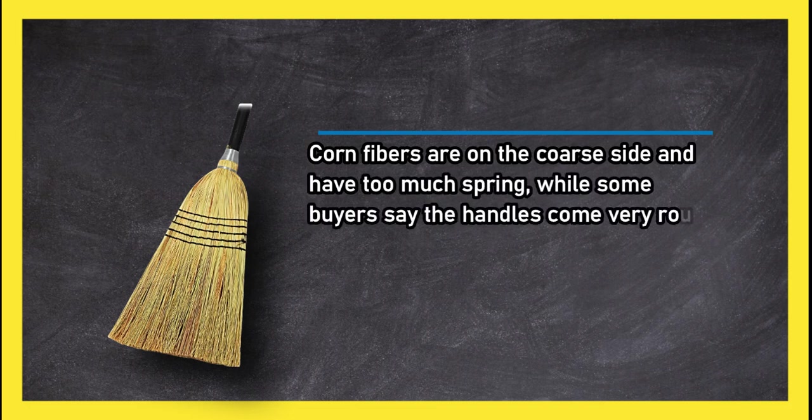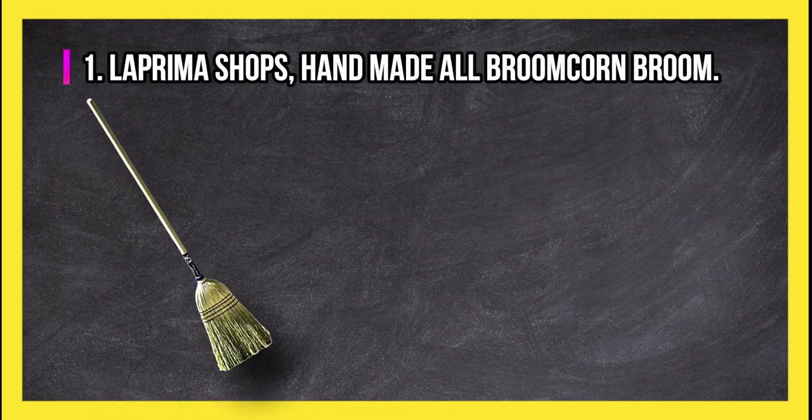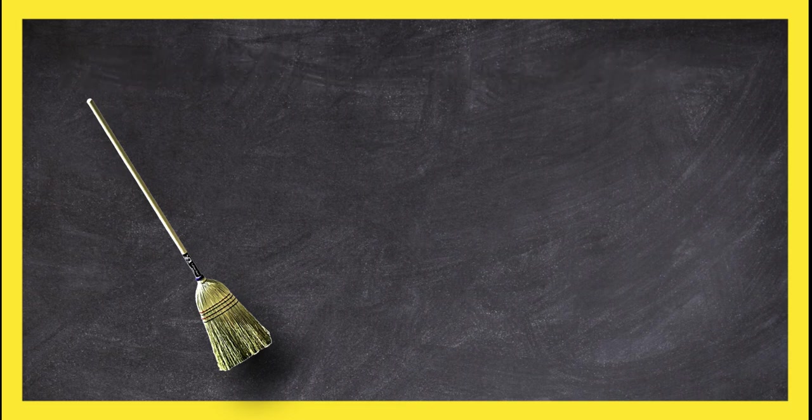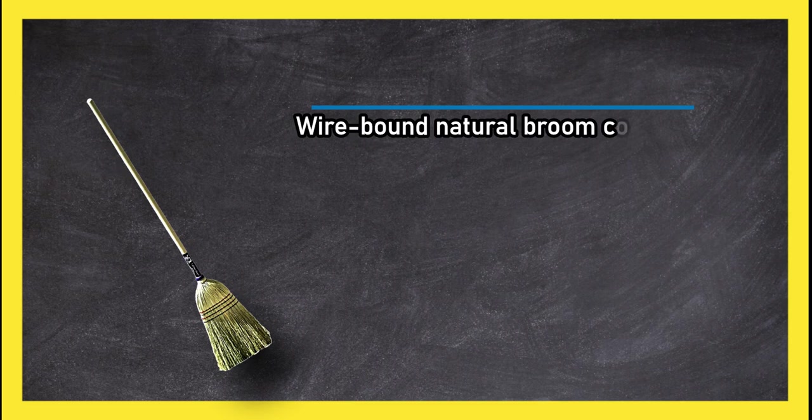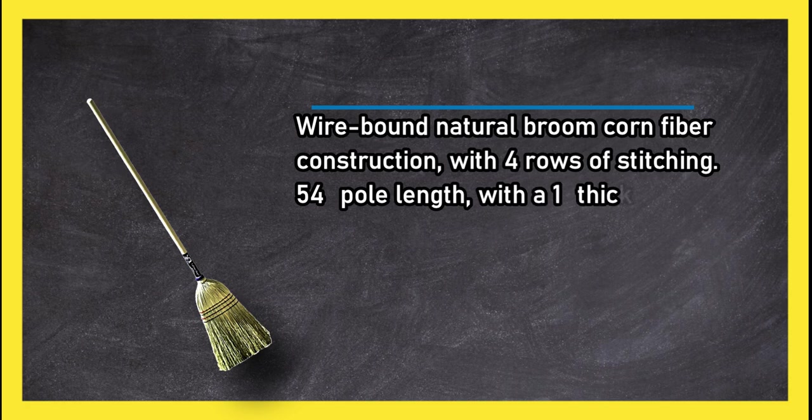At number one, La Prima Shops Handmade All Broom Corn Broom, wire-bound natural broom corn fiber construction with four rows of stitching. 54 inches pole length with a 1 inch thick poplar handle, medium strength broom.